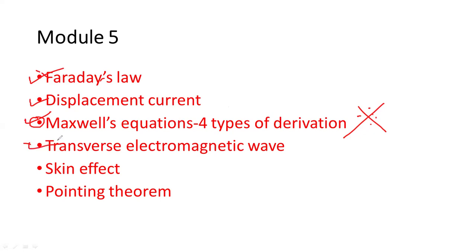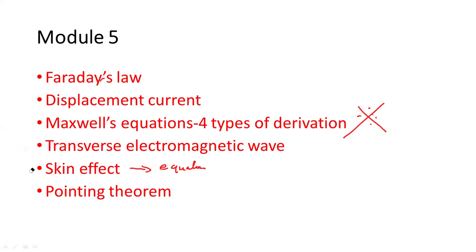Next is transverse electromagnetic waves and their significance. Then, what is the meaning of skin effect? There are some equations you have to remember, then factors affecting the skin effect, and then Poynting theorem — this is also very important. All the topics I highlighted are most important, and there is a 100% chance these kinds of questions will be asked.